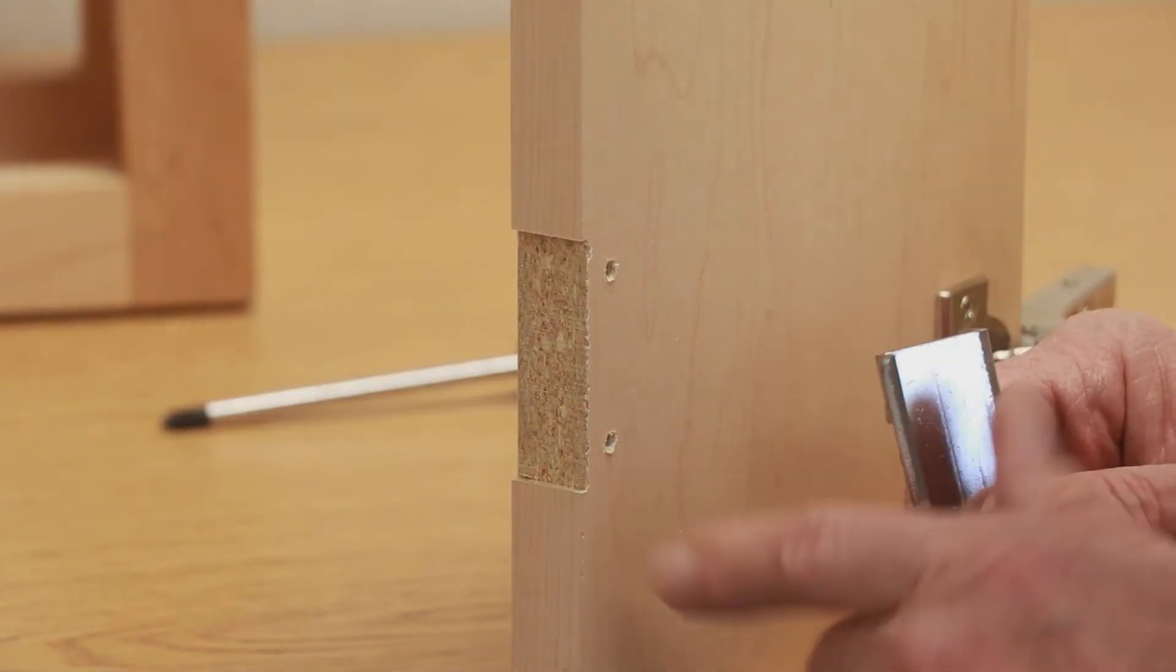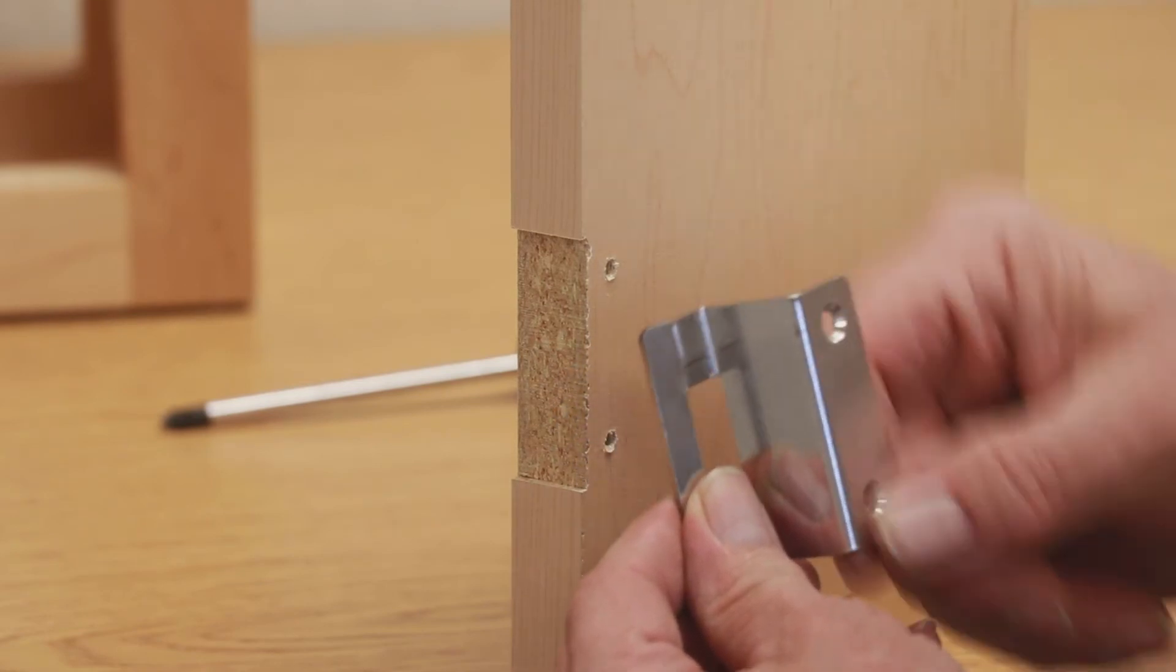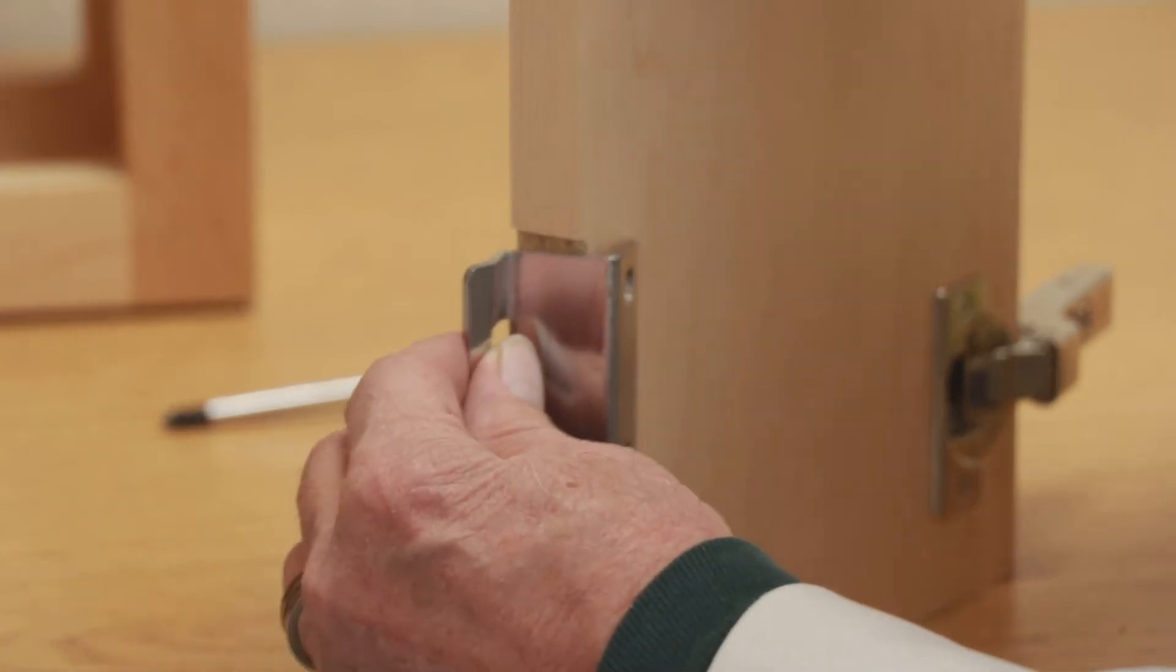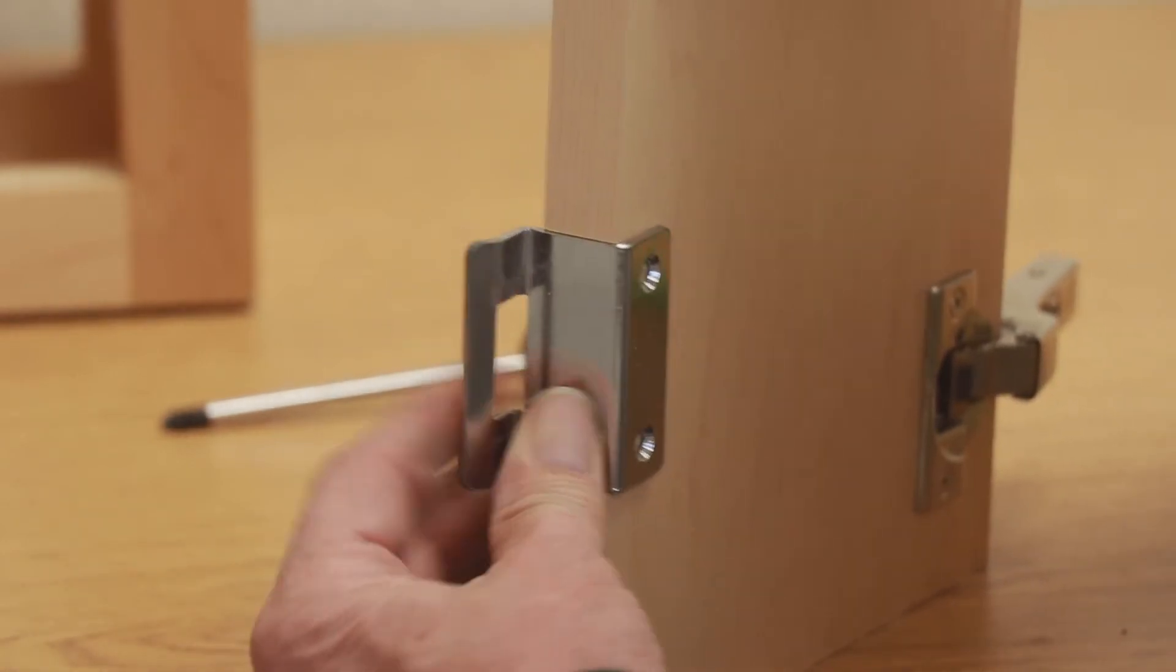There's the machining for the strike. Pre-drilled the holes for the strike, and these are on the inside of the door. And so this strike mounts into there, and we simply put that in.